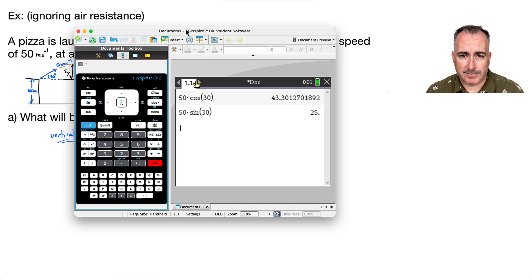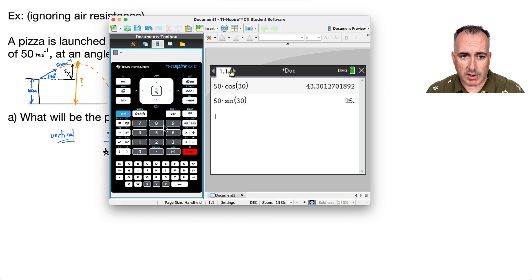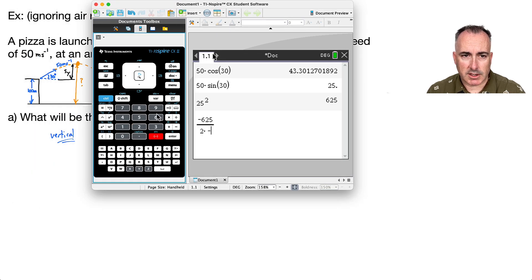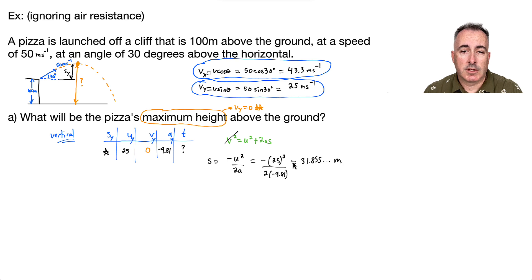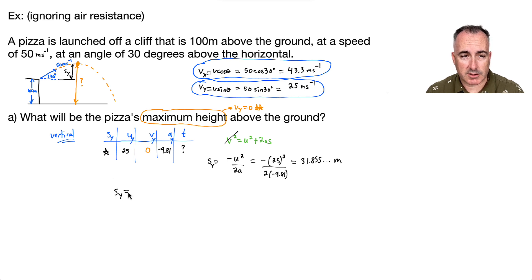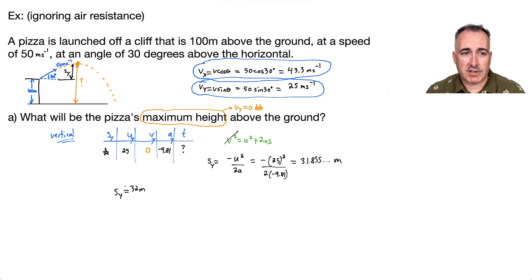Putting in the numbers: it's minus 25 squared, divided by 2 times negative 9.81. That's minus 625 divided by (2 × −9.81). Using my calculator: I get 31.855. So Sy is approximately 32 meters. But keep in mind — that is not my final answer. I've found the height above where it launched, not above the ground.